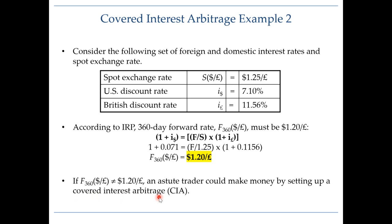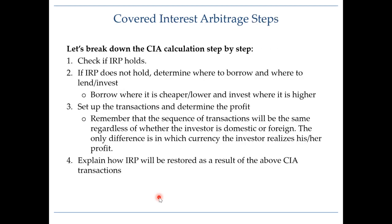In other words, we can make a riskless profit. To compute a covered interest arbitrage problem, you first need to check if interest rate parity holds. Then, if interest rate parity does not hold, you need to determine where you want to borrow and where you want to invest in order to make money.